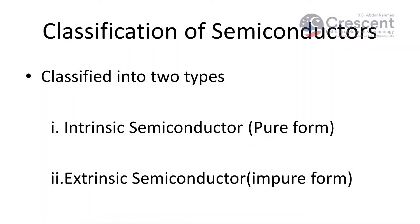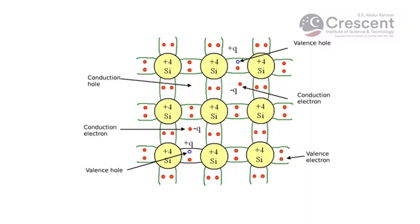Intrinsic semiconductors are the purest form of semiconductors, whereas extrinsic semiconductors are the impure form of semiconductors. Let us consider the intrinsic semiconductor type. The examples are silicon and germanium. Let us consider the silicon semiconductor material.